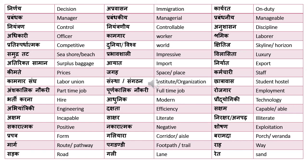If you have excess baggage, you will be penalized or charged extra for the surplus baggage. 'Atirikta saman' is surplus baggage. 'Ayat' means import, 'niriyat' means export, 'keemate' means prices, 'jagay' means space or place. 'Karmachari' means employee or staff, and can also refer to a labor union or workers' union. 'Santha' or 'sangatan' means institute or organization.